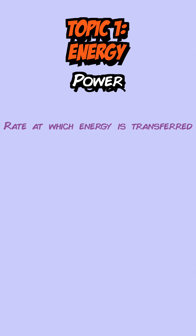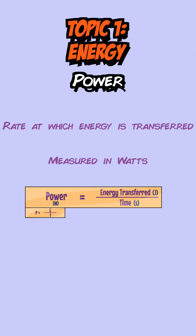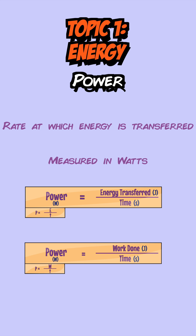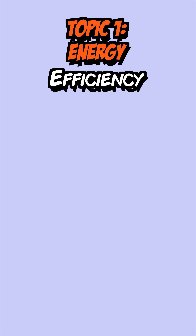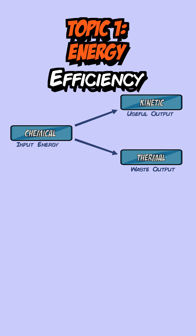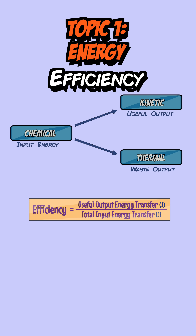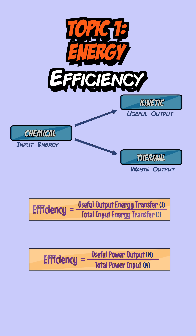Power is defined as the rate at which energy is transferred and is measured in watts. Energy transferred is the same as work done, so the two equations for power can be written as: power equals energy transferred over time, and power equals work done over time. Efficiency is defined as the useful energy given out by an object over the total energy put into the object, and you can also write it in terms of power as useful power output over total power input.